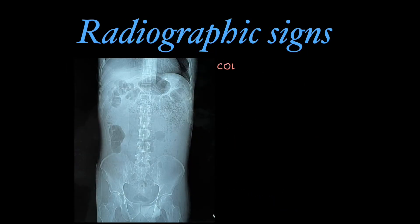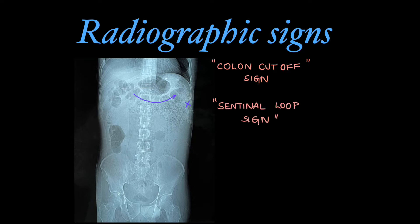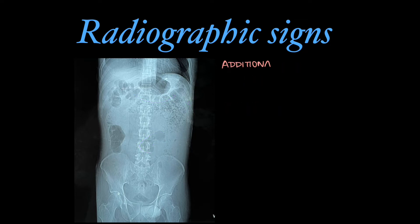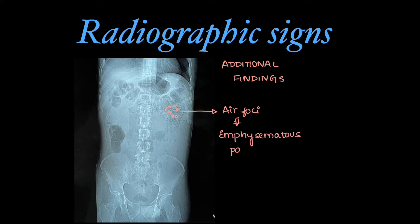Coming to radiographic signs: the first is the colon cutoff sign, in which the colon is not visualized after the splenic flexure due to spasm of the descending colon. Next is the sentinel loop sign, in which there is localized ileus of a small intestinal loop, commonly the jejunal loop. Additional findings include air foci in the upper abdomen, occurring in emphysematous pancreatitis due to secondary infection by anaerobic organisms.